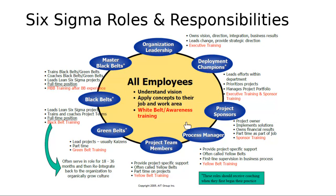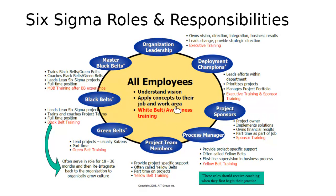For example, what is the role of the project sponsor? What is the role of the black belt? What does white belt or awareness training mean? That means all the employees who are going to have the Six Sigma project implemented in their organization need to be aware so they can collaborate to achieve the goal of the project.